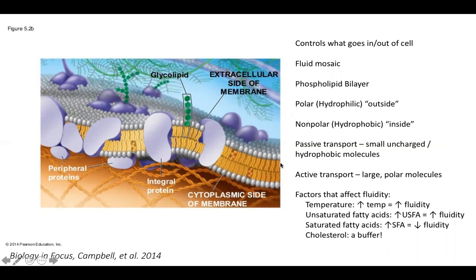We need to know a little bit about the chemistry behind this phospholipid bilayer. It's called a phospholipid bilayer because it's made up of phospholipids and there are two layers of them. The inside has nonpolar hydrophobic tails, and the outside has polar phosphate groups — so they like water.